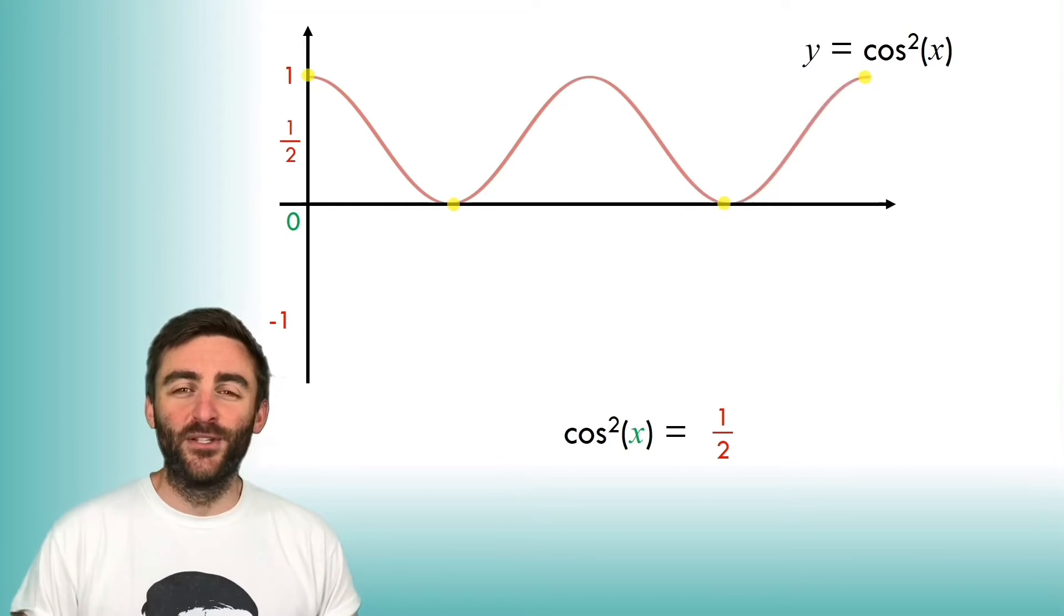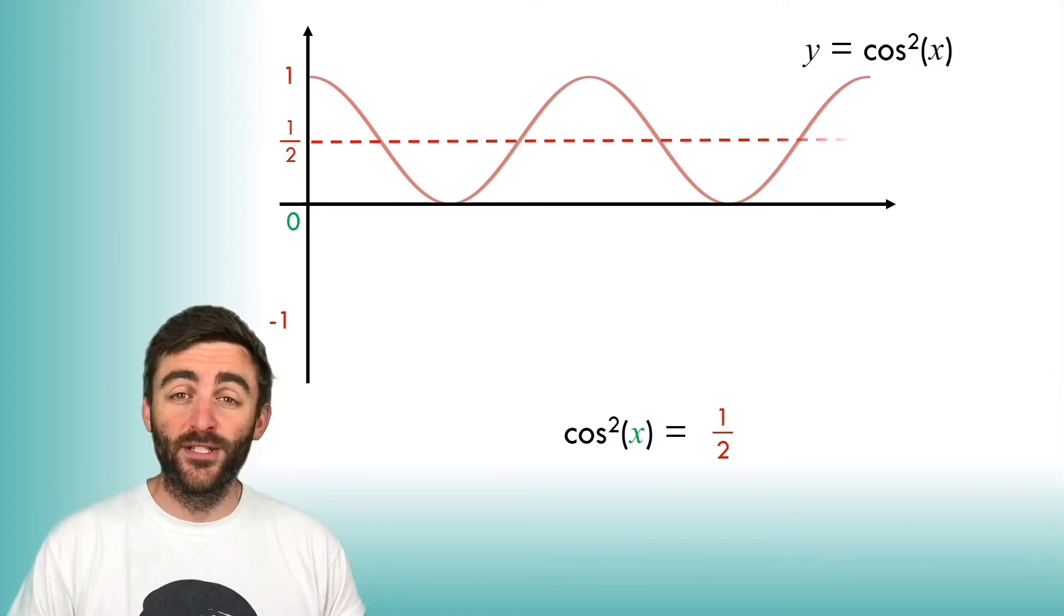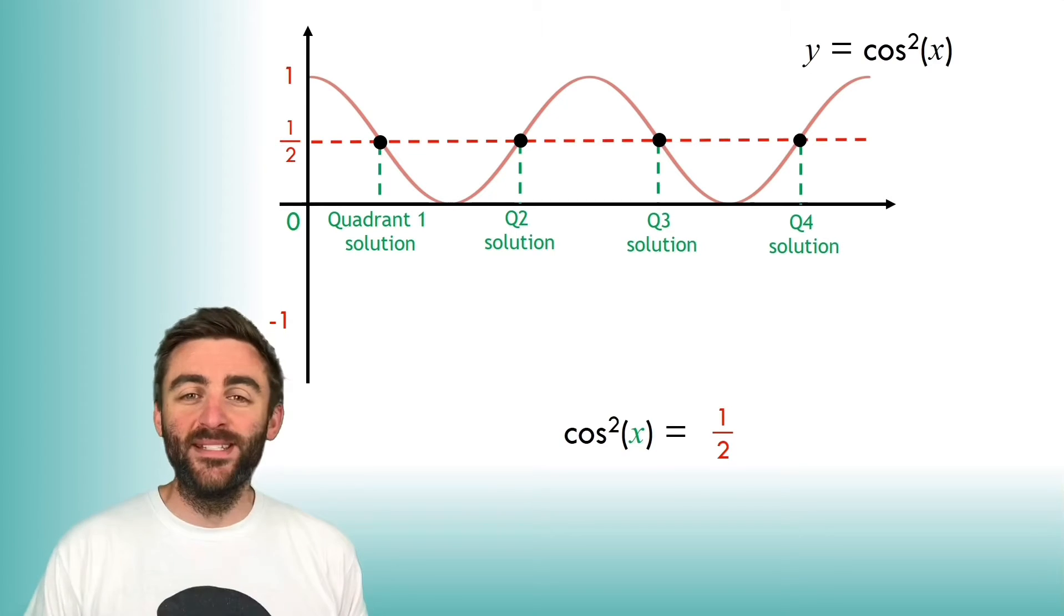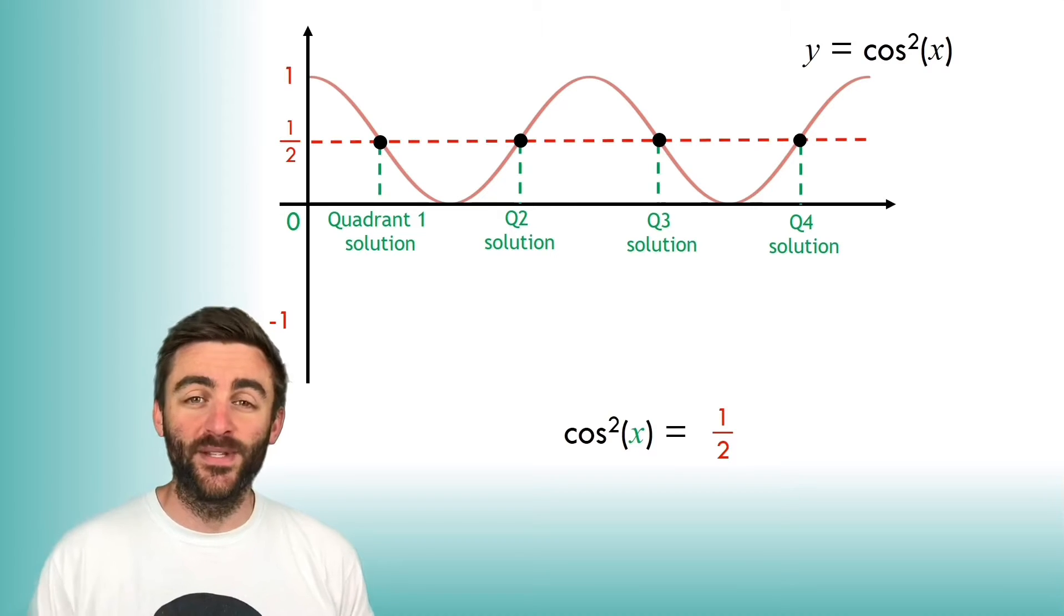What does that mean for solutions to cos²x equals a half? Well it means we're going to have a solution in quadrants 1, 2, 3, and 4. So between 0 and 360, there are four well-defined solutions to the equation cos²x equals a half.